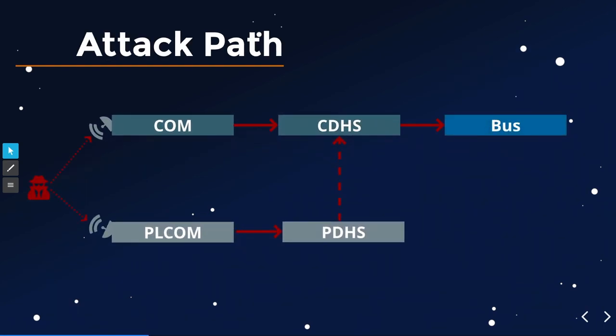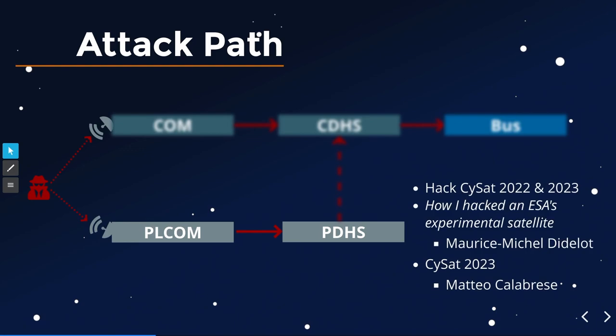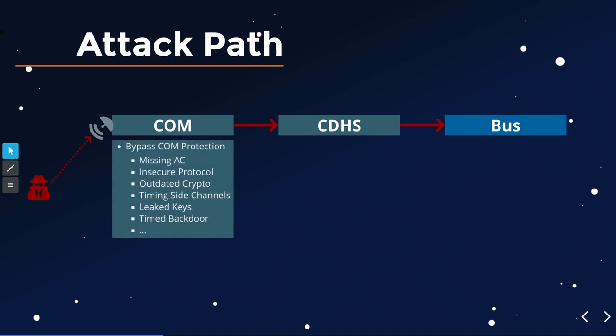What might be the attack path through the satellite? As an attacker, you'd arrive at a communication system, propagate your attack to the CDHS, and take full control of the bus system. You can only escalate vertically — from the payload communication system to the payload data handling system to the CDHS. Many people have looked at payload attacks before, including the Hack-a-Sat competition and a talk at CISA 2023 from Matteo Calabrese, but we'll be looking at the bus.